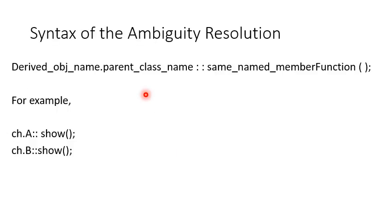First, to resolve this ambiguity problem, use the syntax: derived class object name dot parent class name scope resolution operator and member function name. That is the resolution of the ambiguity problem in multiple inheritance.